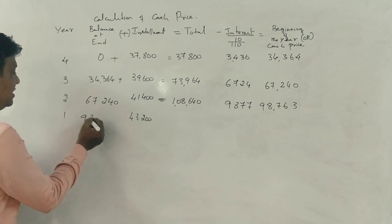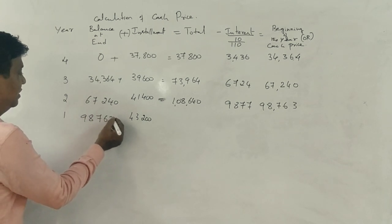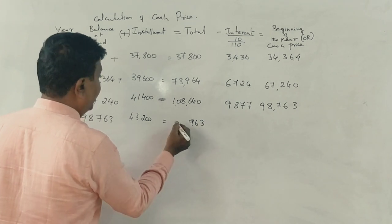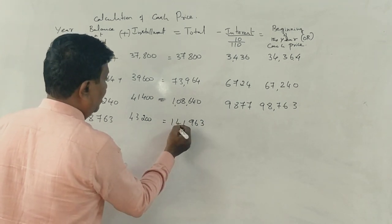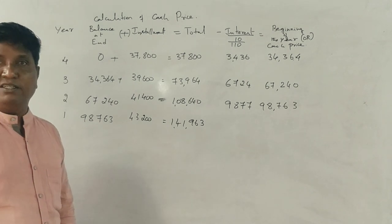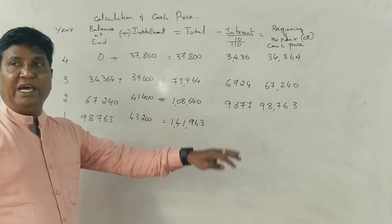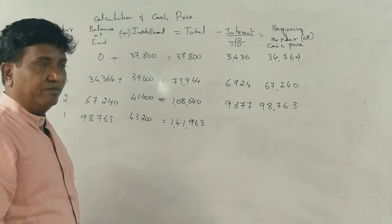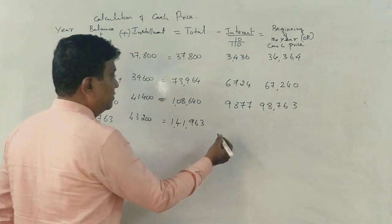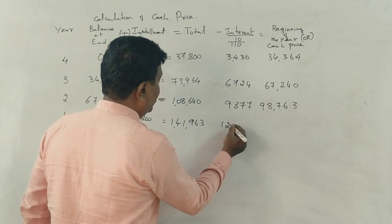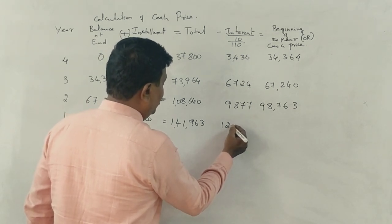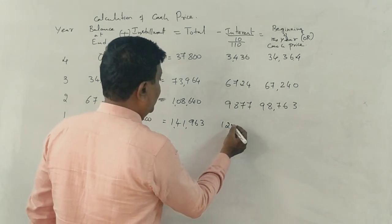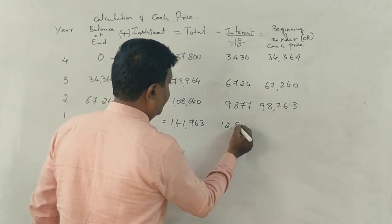This is the first year of the year. Adding 43,200 gives 141,963 into 10 divided by 110. This equals one lakh twenty-nine thousand fifty-eight, 1,29,058 rupees.